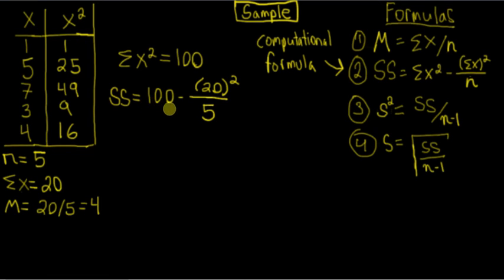So we have 100 minus 20 squared over 5. So let's just continue on here. 100 minus, and then 20 squared is 400, divided by 5. 400 divided by 5 is 80. And then 100 minus 80 is 20. So our sum of squares is 20.